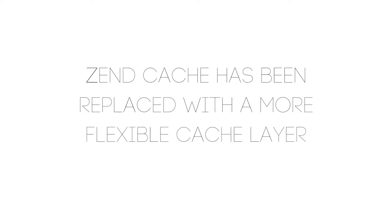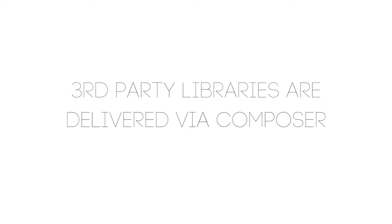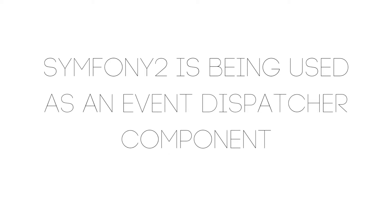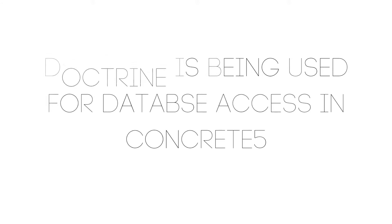Now let's move on to the architecture side of C5. Zend Cache has been replaced with a more flexible cache layer. C5 now also supports IPv6, and C5's third-party libraries are all delivered by Composer, which is a tool used for dependency management in PHP. The Laravel PHP framework is being used to power the new file-based configuration. Symfony 2 is being used as an event dispatcher component and Doctrine is being used for database access.